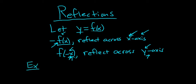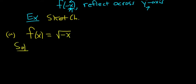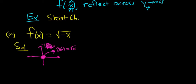Let's do a couple examples. Sketch f of x equals the square root of negative x — call it part a. So how would you graph this by hand? First you graph the square root function — that's your base function, your mother function. So the square root of x looks like this. Let's call it g of x equals the square root of x. Then you see the negative in front of the x, so you reflect across the y-axis.